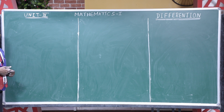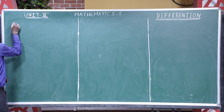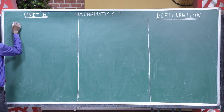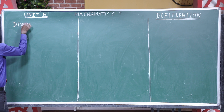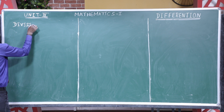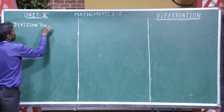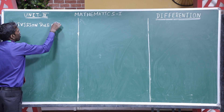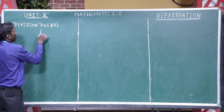Now, we discuss the last operation. This is the coefficient rule, also called the division rule — the division of two functions.